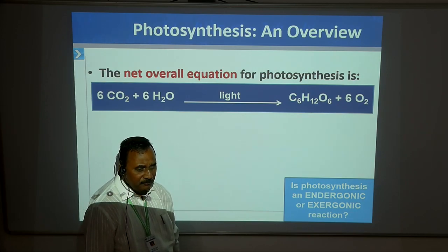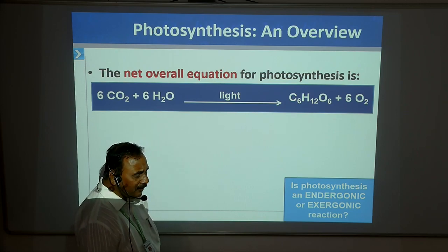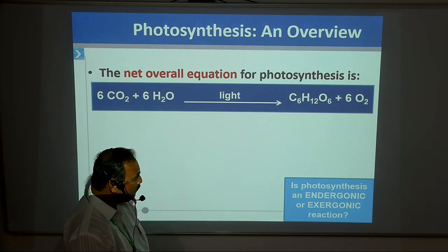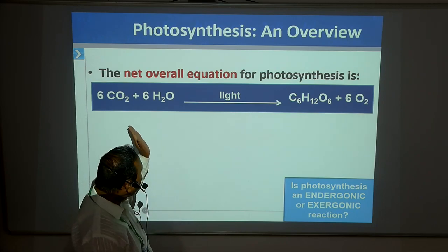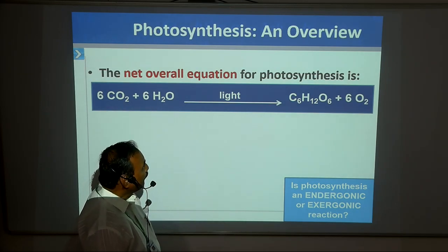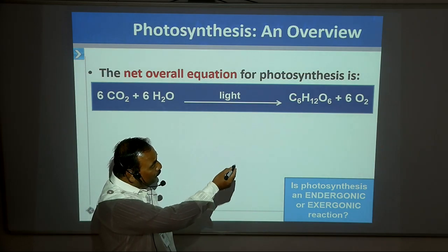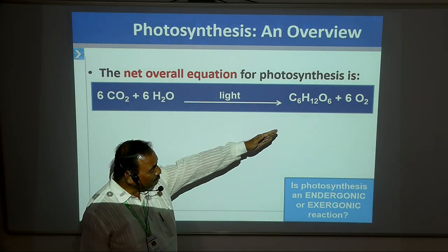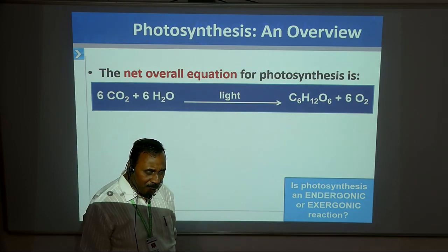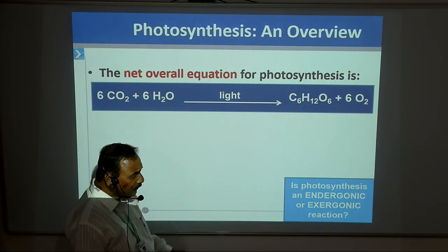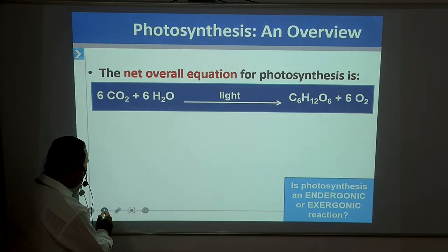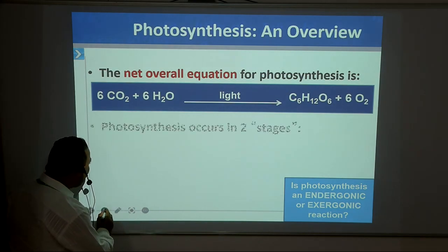The mechanism of the entire photosynthesis is divided into two parts: light reaction and dark reaction. If you see the overall reaction, this is 6CO2 plus 6H2O — in the presence of light and with the help of the chlorophyll molecule, C6H12O6 plus 6 molecular oxygens are produced. This overall reaction is carried out only in the presence of the chlorophyll molecule.